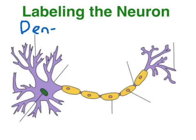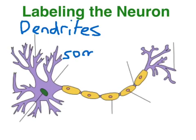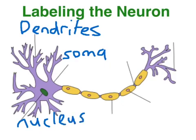These tree-like structures at one end are the dendrites. Apologies for the handwriting — I'm using my finger on an iPad. We've got the cell body, which is the soma, and in the middle of that we've got the nucleus. And we've got the axon here.